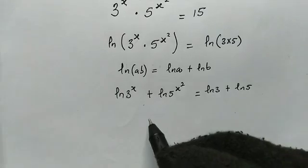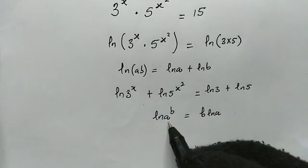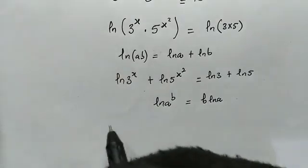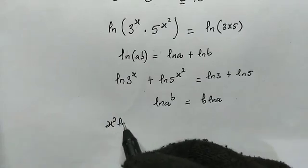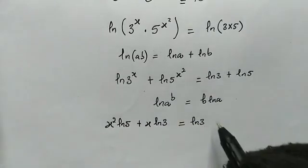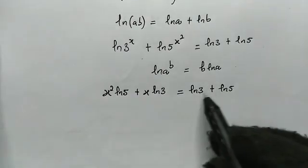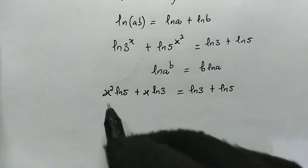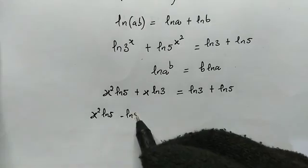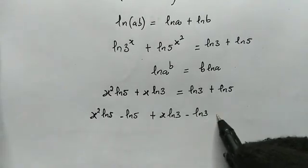Now using another property: the natural log of a to the power of b equals b multiplied by the natural log of a. Applying this, the equation becomes x times natural log of 3 plus x squared times natural log of 5, equal to the natural log of 3 plus the natural log of 5. From here we subtract the right-hand side terms, giving x squared times natural log of 5 minus natural log of 5, plus x times natural log of 3 minus natural log of 3, equals 0.